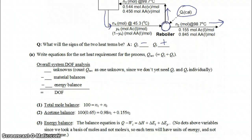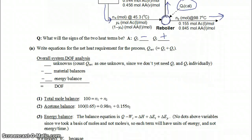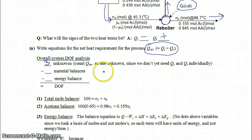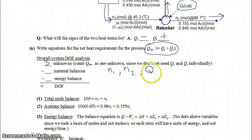The main question is how would we solve for Q_net, which is the sum of Q_condenser and Q_reboiler. In order to do that we're going to attempt to do a balance on the overall system. In the overall system we have three unknowns: N1, N2, and Q_net. We're not going to split up QC and QR individually — we're just going to solve for their sum, which is Q_net.